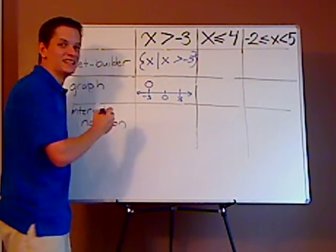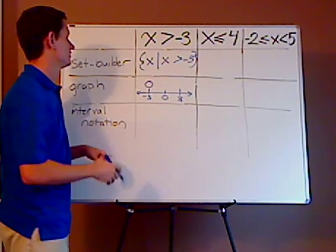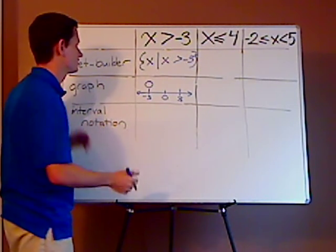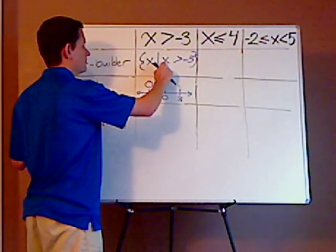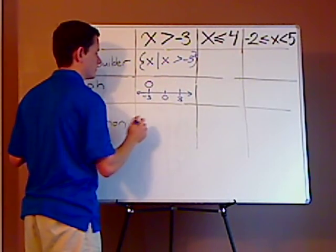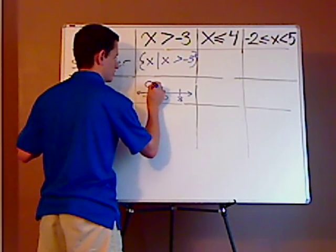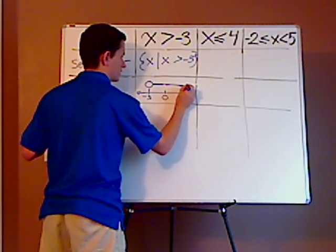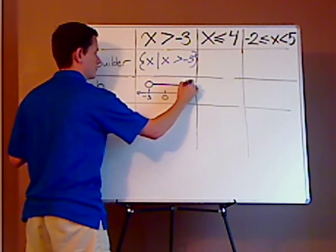Now, what I'm going to do is I need to graph the solution, all possible x values. So that means, since this is greater, it's going to be everything above. So it's going to go in this direction, just like that. And that's how you graph it.